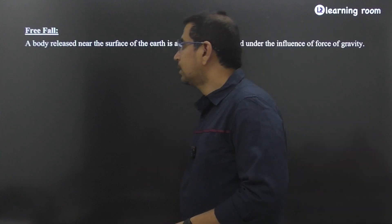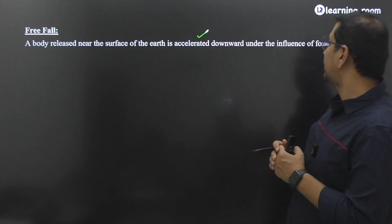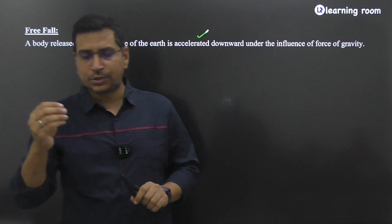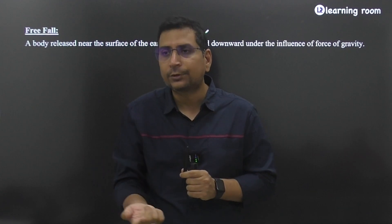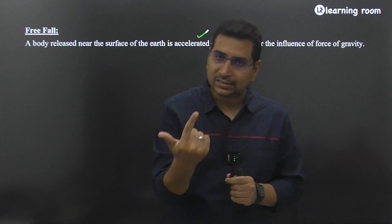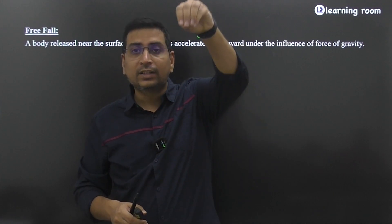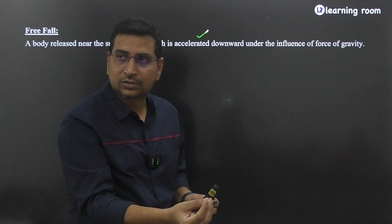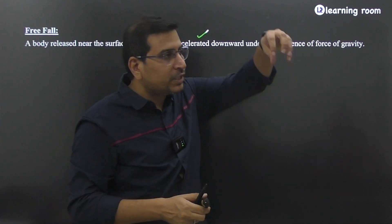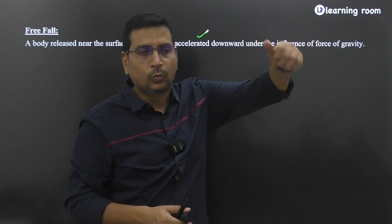From this observation, let's try to give a definition to what exactly free fall means. If an object is released near the surface of Earth, it is accelerated downward under the influence of the force of gravity. When I drop the object, it is moving — and when an object is moving, there are different kinds of scenarios possible. It can move with uniform velocity, it can accelerate or decelerate. When the object is traveling in the downward direction, the force is trying to pull the object, which will increase its velocity.